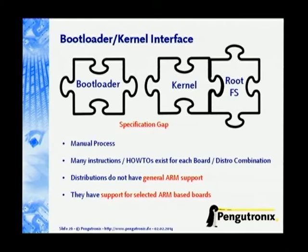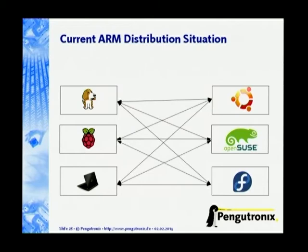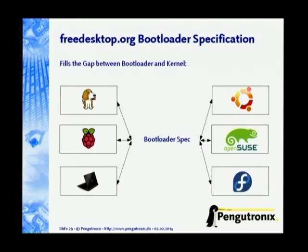It's basically a manual process. We have a lot of interesting hardware and a lot of distributions, and for any combination you need to define something special. This is where the freedesktop bootloader specification comes in — it tries to fill this gap and provide something that can be supported for all these devices, making it possible to discover what boot targets are available.